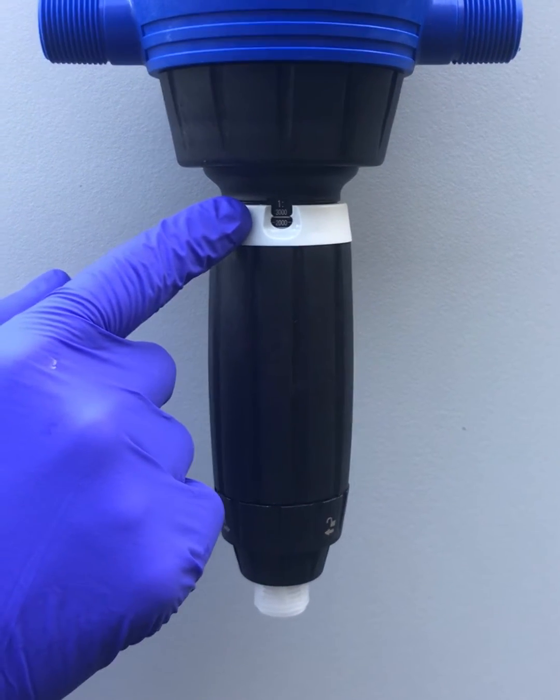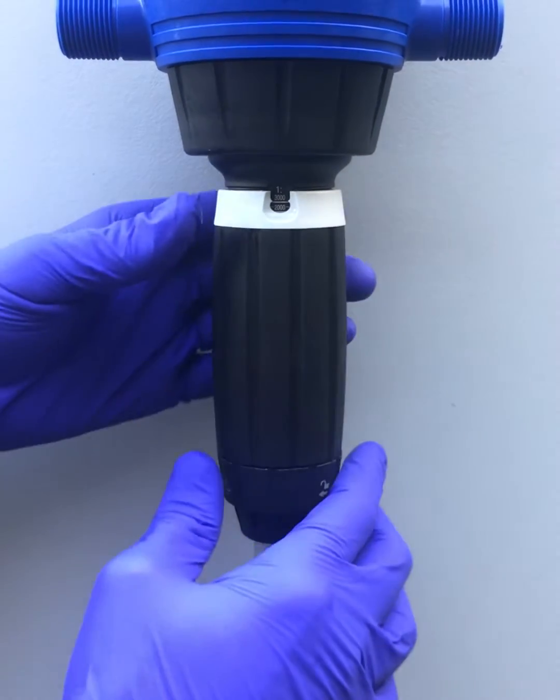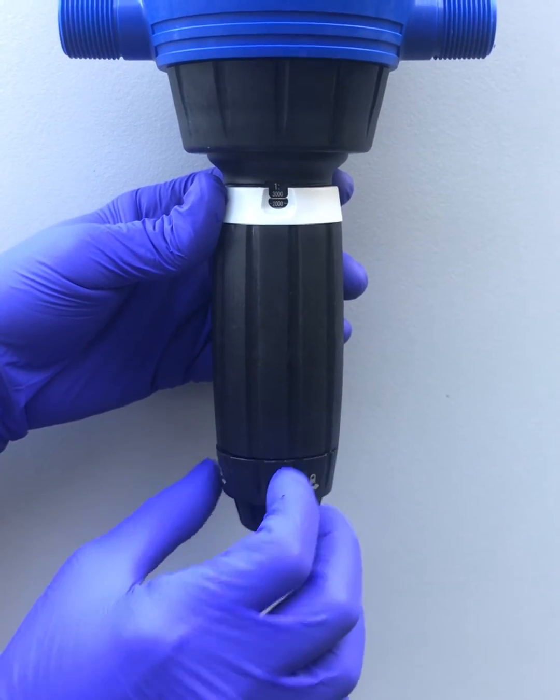To change the reading on your scale go ahead and locate the locking nut at the lower end of your stem assembly and turn it 90 degrees towards the unlock.